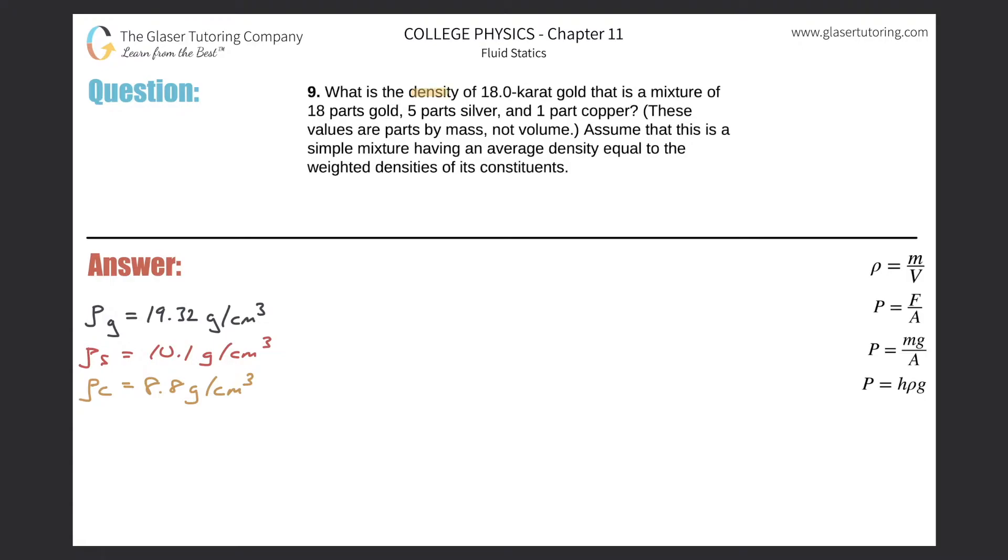Number nine, what is the density of 18 karat gold that is a mixture of 18 parts gold, five parts silver, and one part copper? These values are parts by mass, not volume.